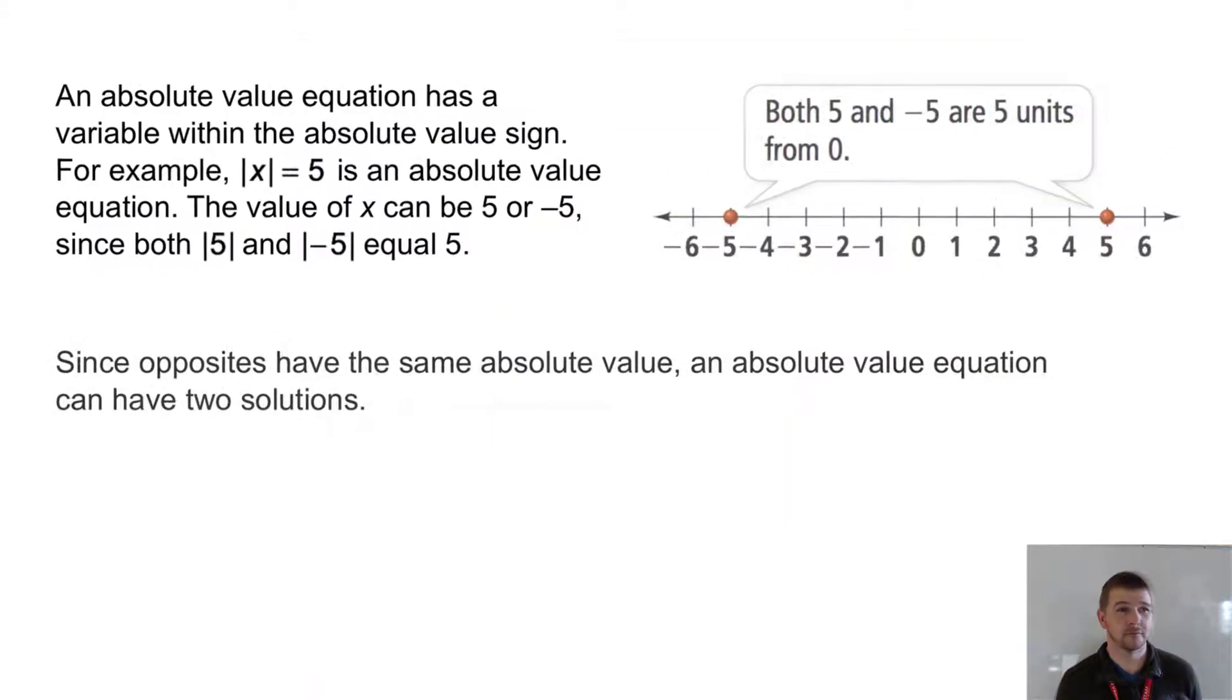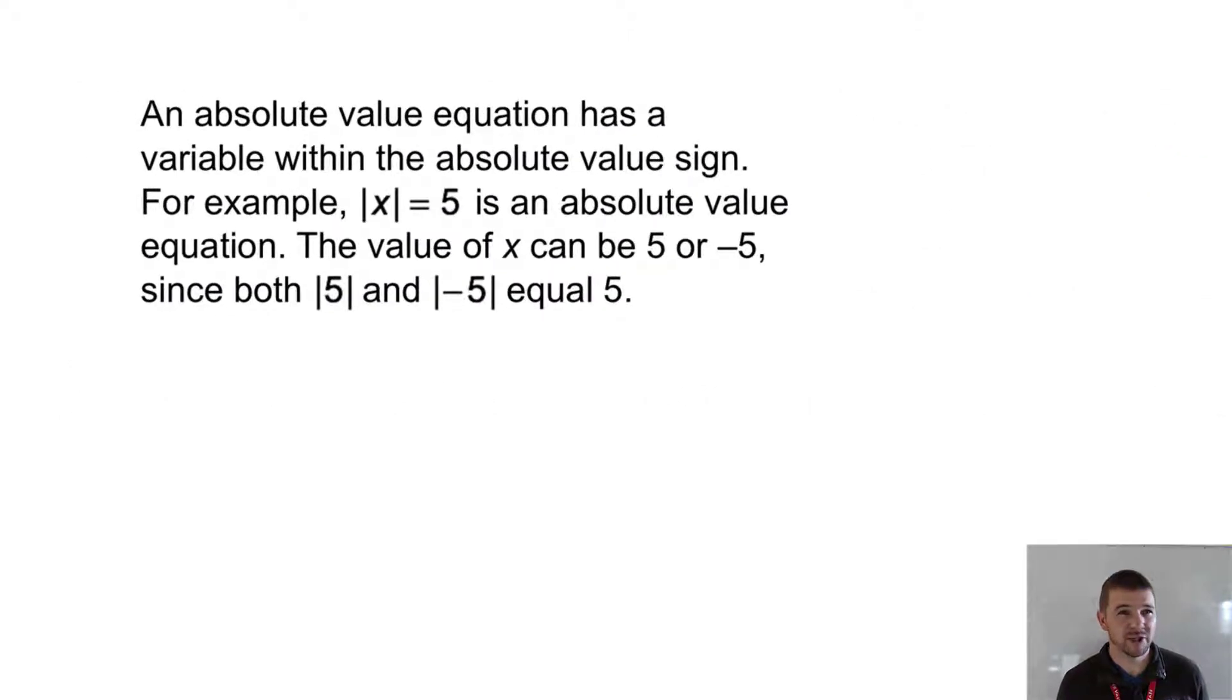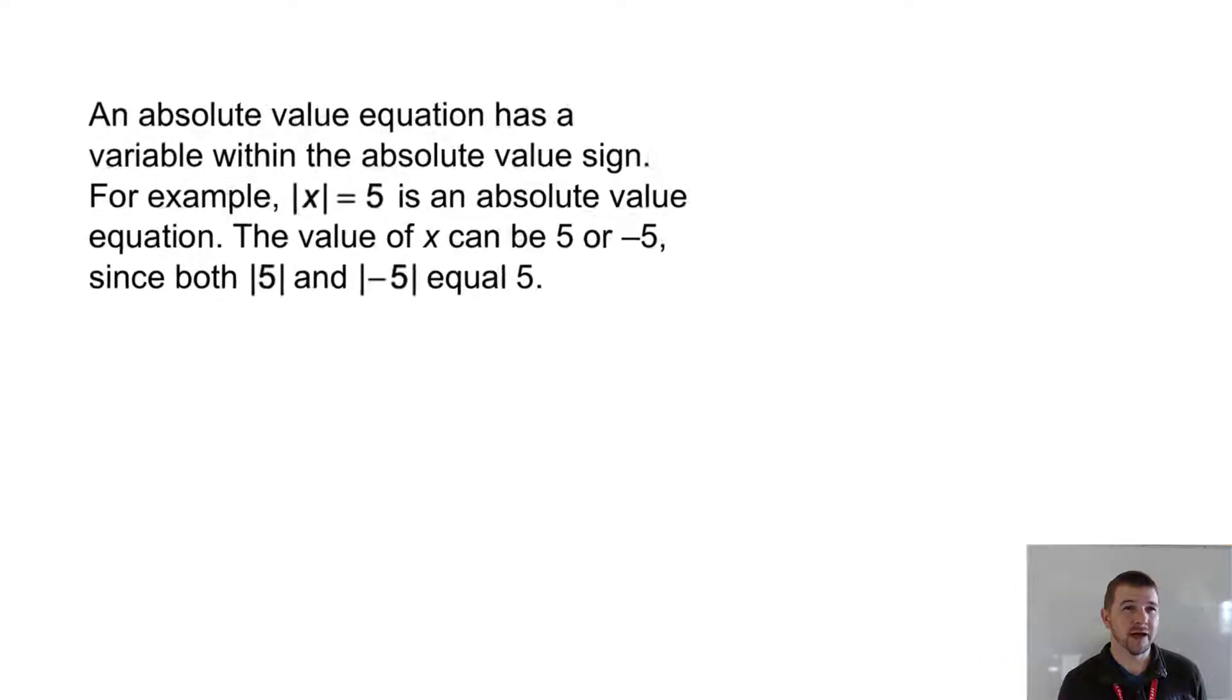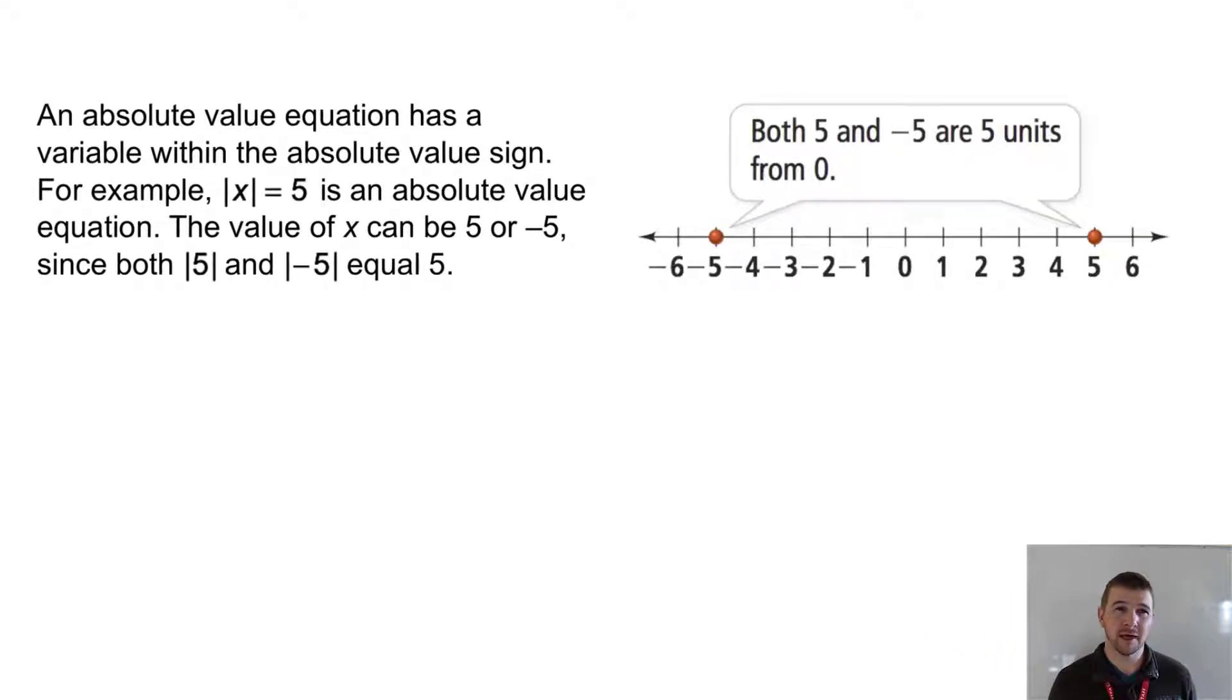An absolute value equation has a variable within the absolute value sign. For example, |x| = 5 is an absolute value equation. The value of x can be 5 or -5, since both |5| and |-5| equal 5. We can see on the number line that both 5 and -5 are 5 units from 0.